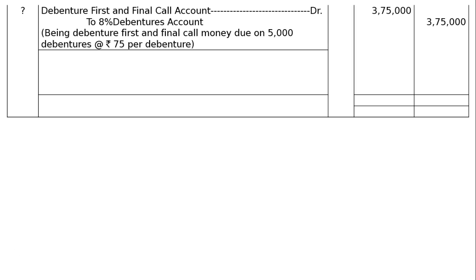Next entry — Debenture First and Final Call Account debited to 8% Debentures Account, being debenture first and final call money due on 5,000 debentures at Rs.75 per debenture. That is 5,000 × Rs.75 = Rs.3,75,000 in both the debit and credit columns.